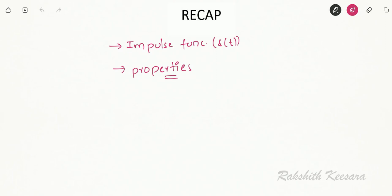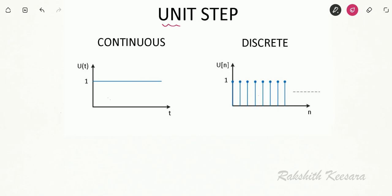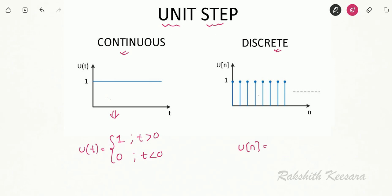The first signal is the unit step. I can write this as u(t) equal to 1 for t greater than 0, and u(t) is 0 for t less than 0. This is for continuous time. Coming to discrete, I can write u(n) equal to 1 for n greater than or equal to 0, and u(n) equal to 0 for n less than 0.